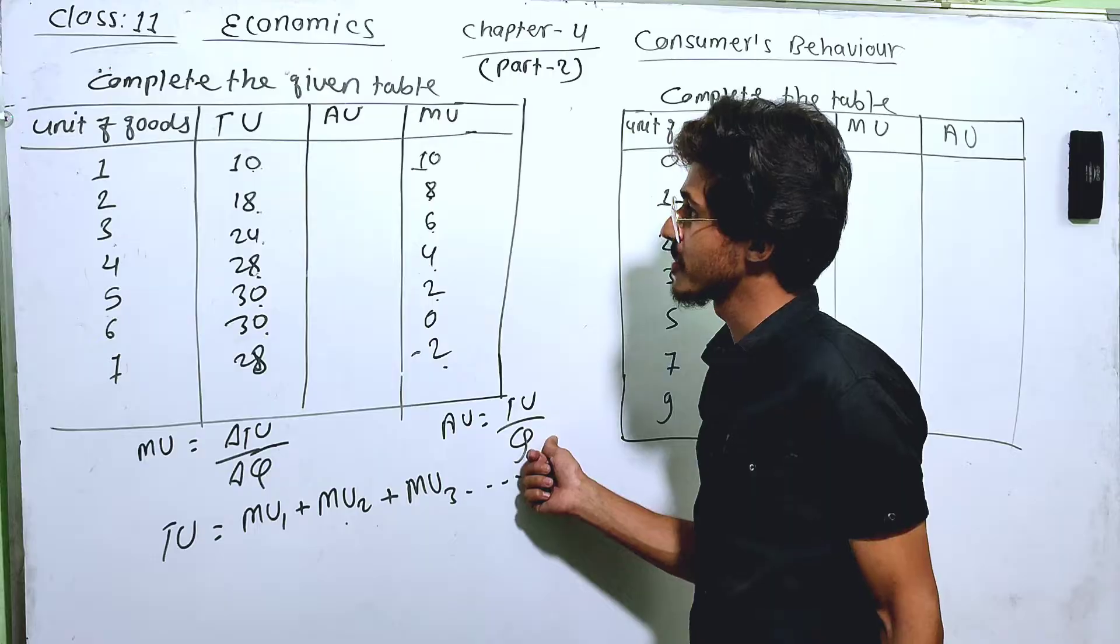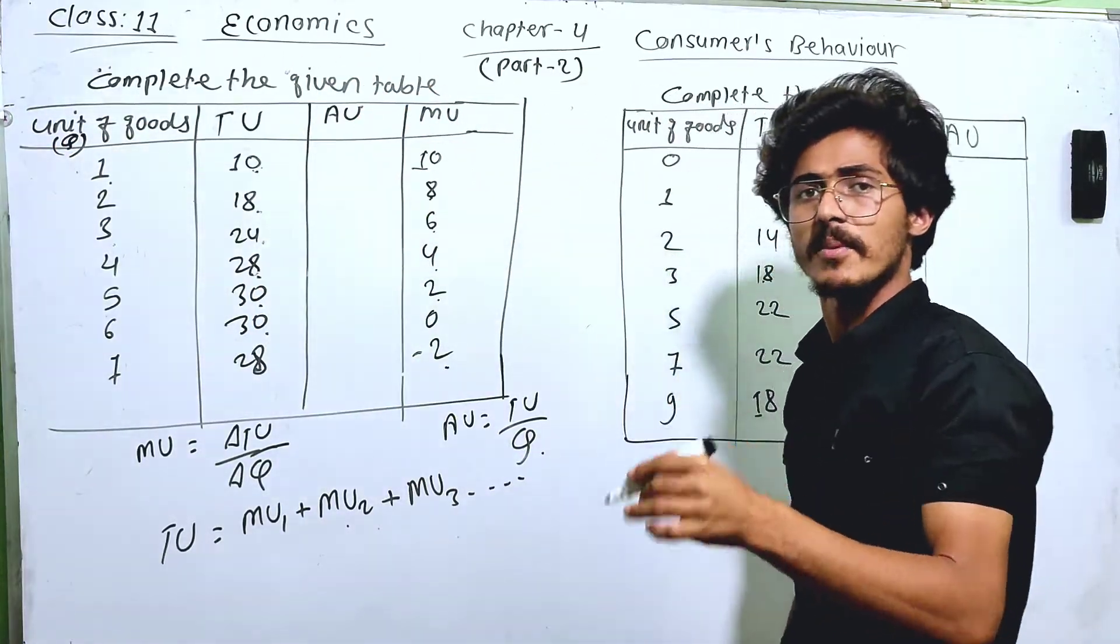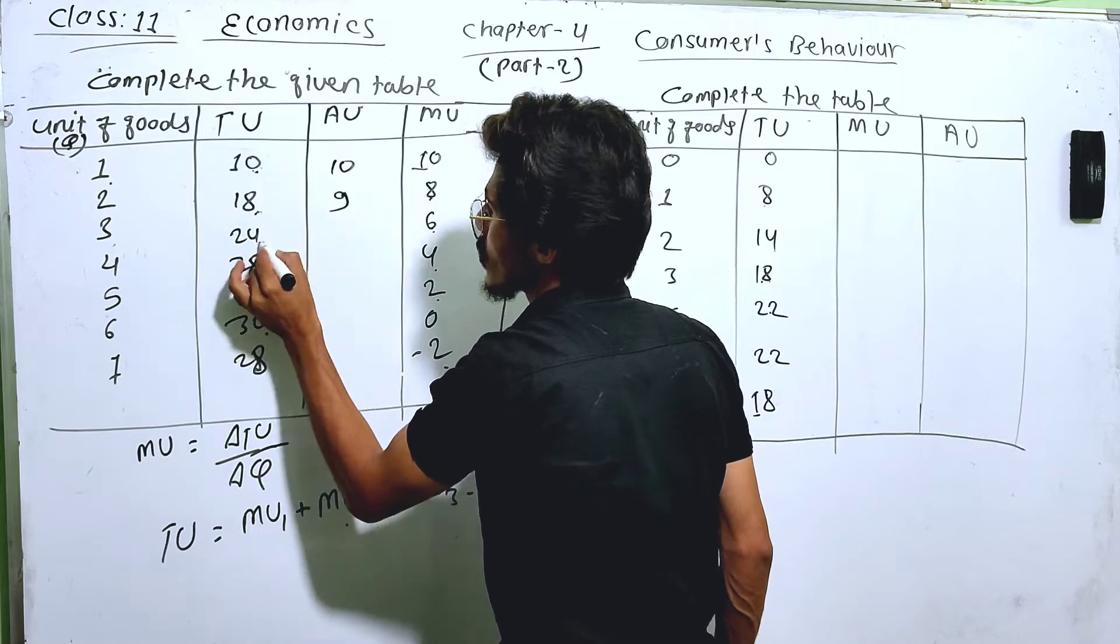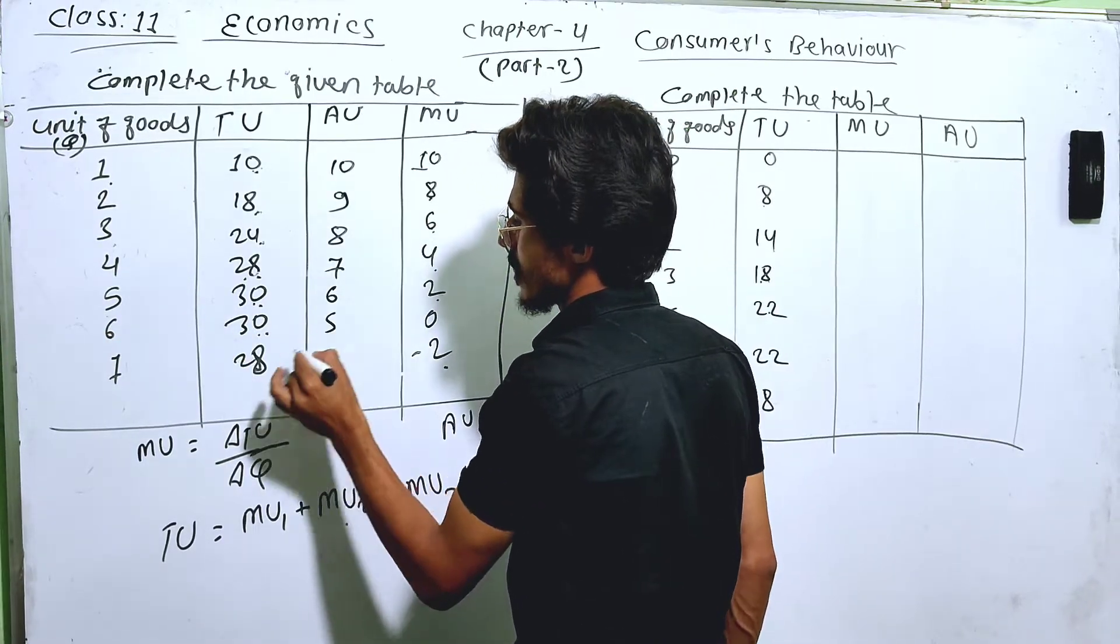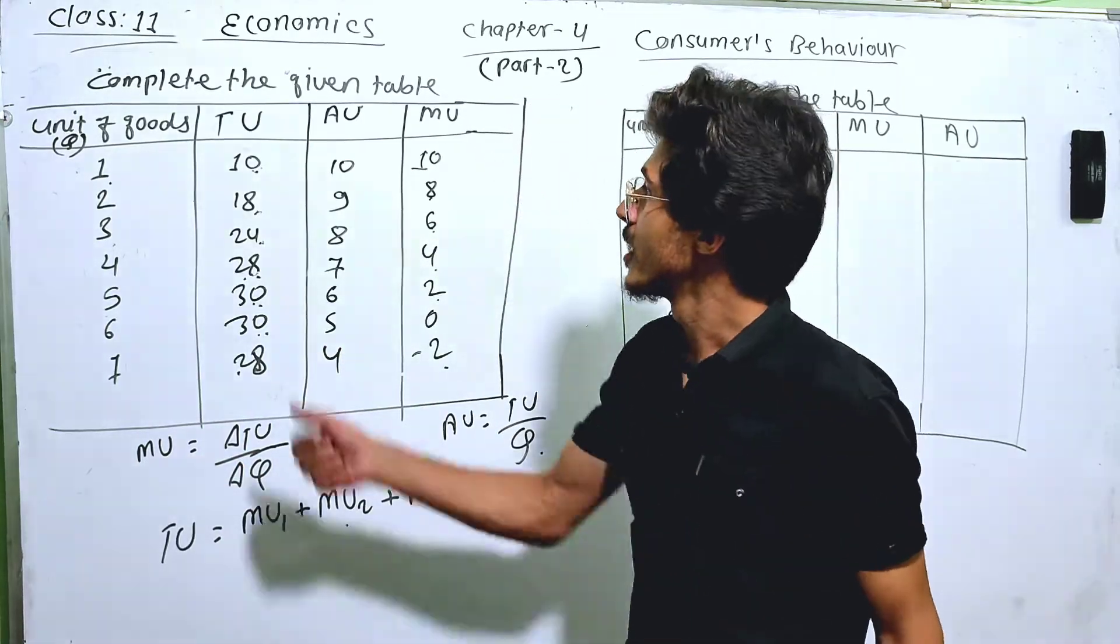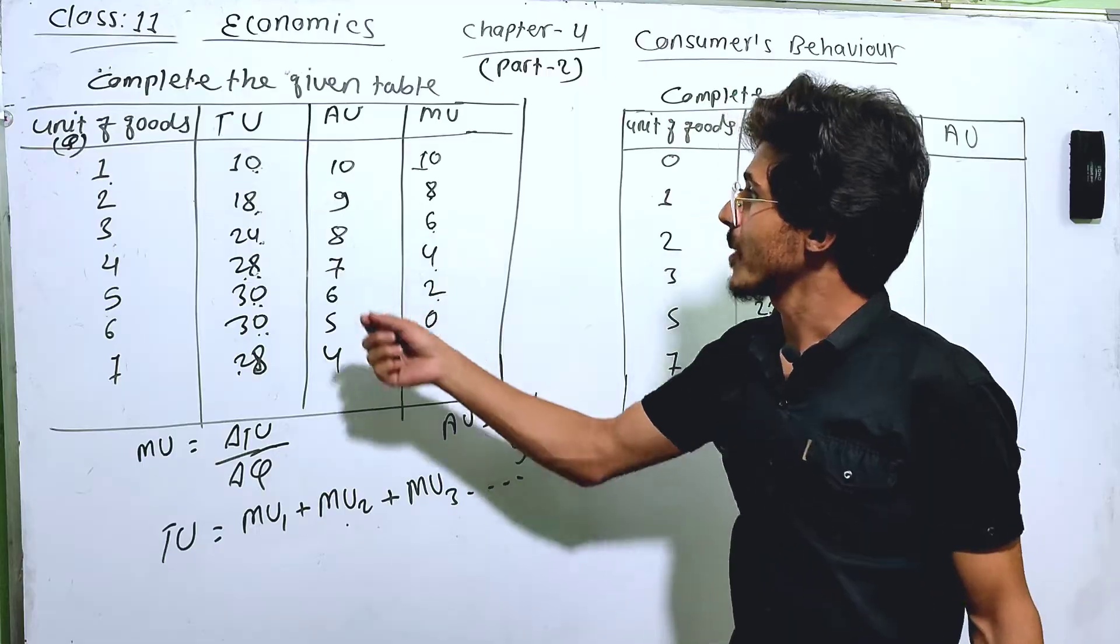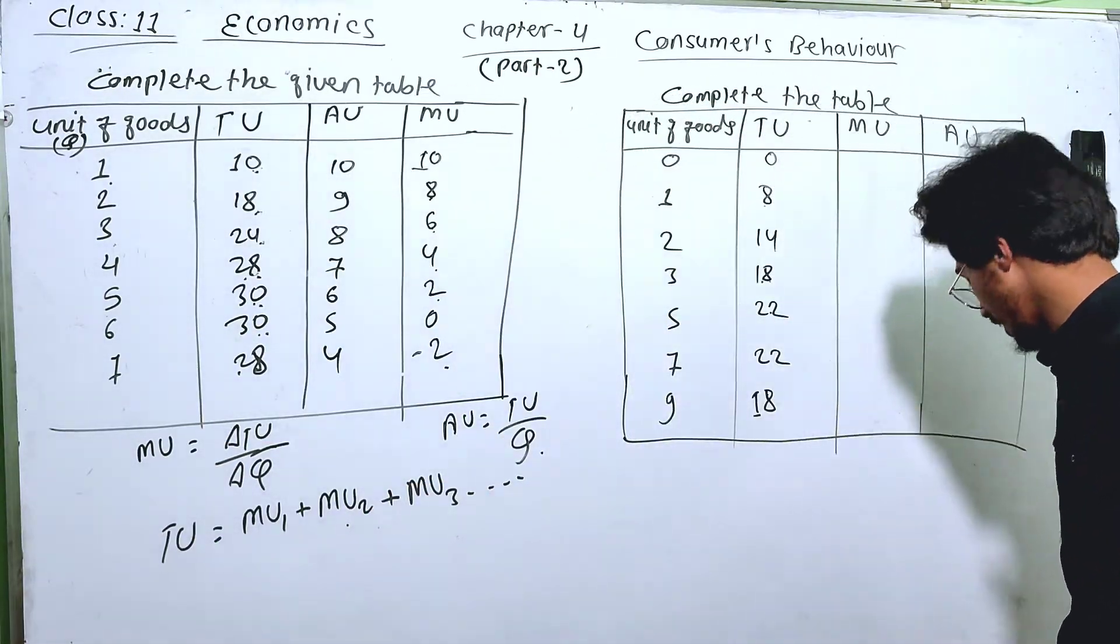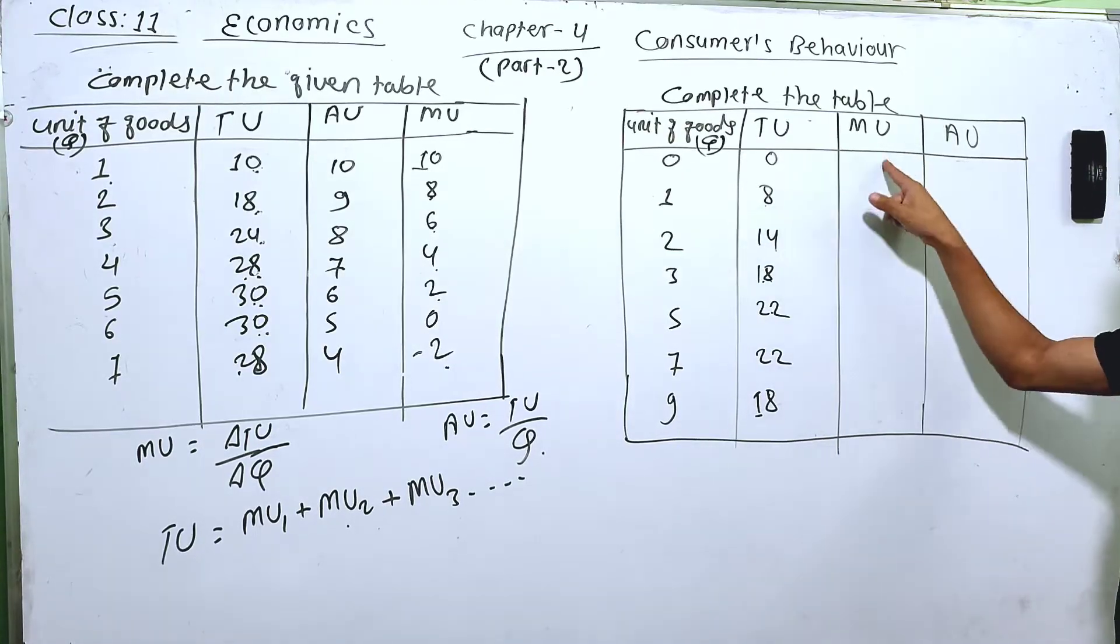Goods, you can relate by dividing. The average utility: total utility 10 divided by Q1, the unit of goods, the quantity. TU divided by Q: 10 divided by 1 is 10, 18 divided by 2 is 9, 24 divided by 3 is 8, 28 divided by 4 is 7, 30 divided by 5 is 6, 30 divided by 6 is 5, 28 divided by 7 is 4.